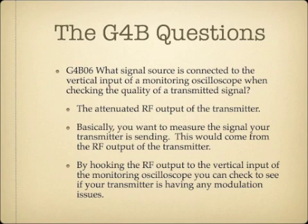What signal source is connected to the vertical input of a monitoring oscilloscope when checking the quality of a transmitted signal? The answer is the attenuated RF output of the transmitter. By hooking the RF output to the vertical input of the monitoring oscilloscope, you can check if your transmitter is having any modulation problems.